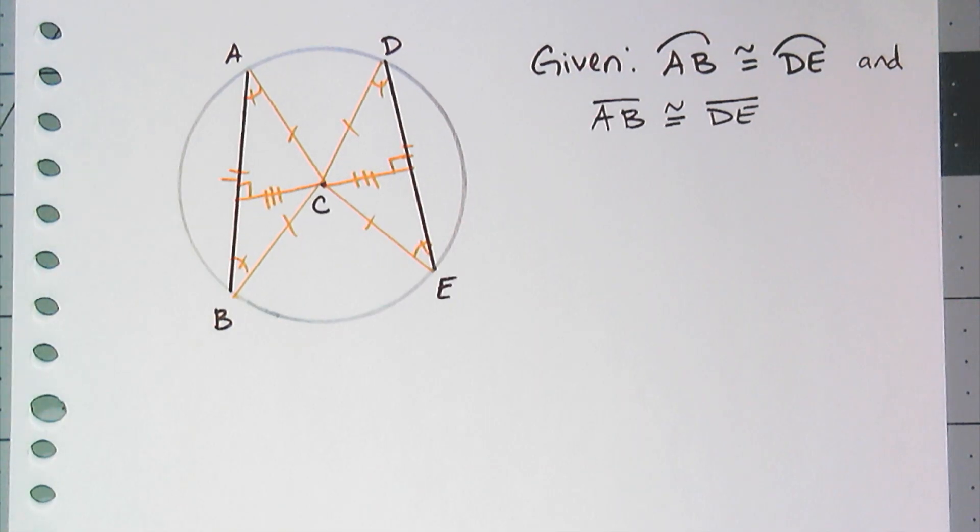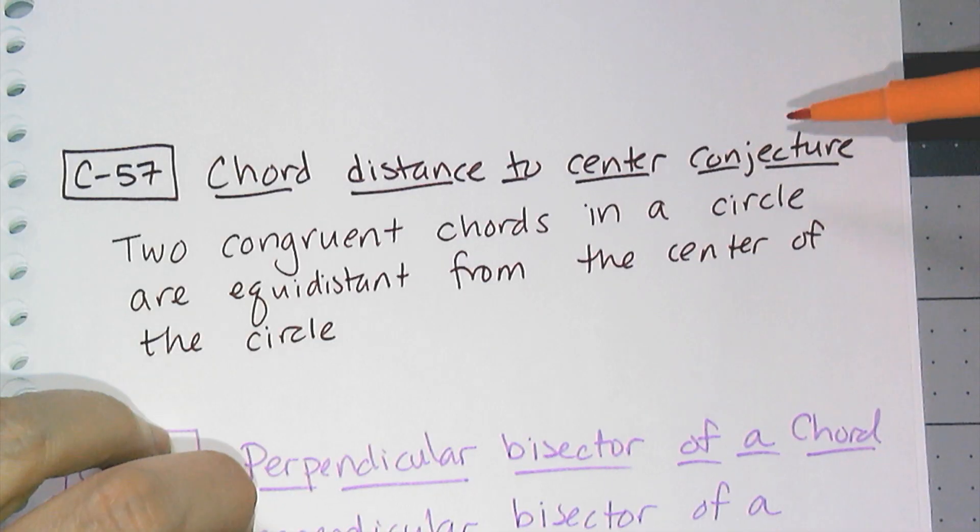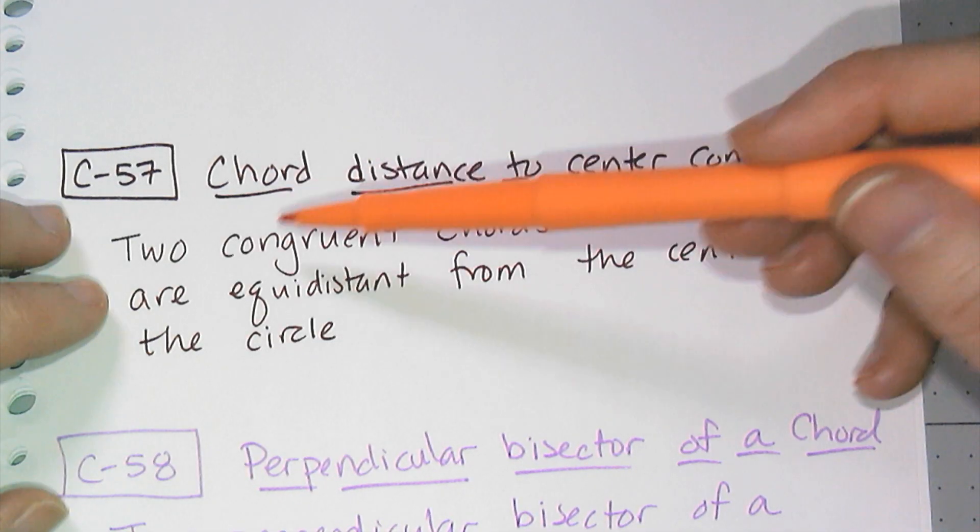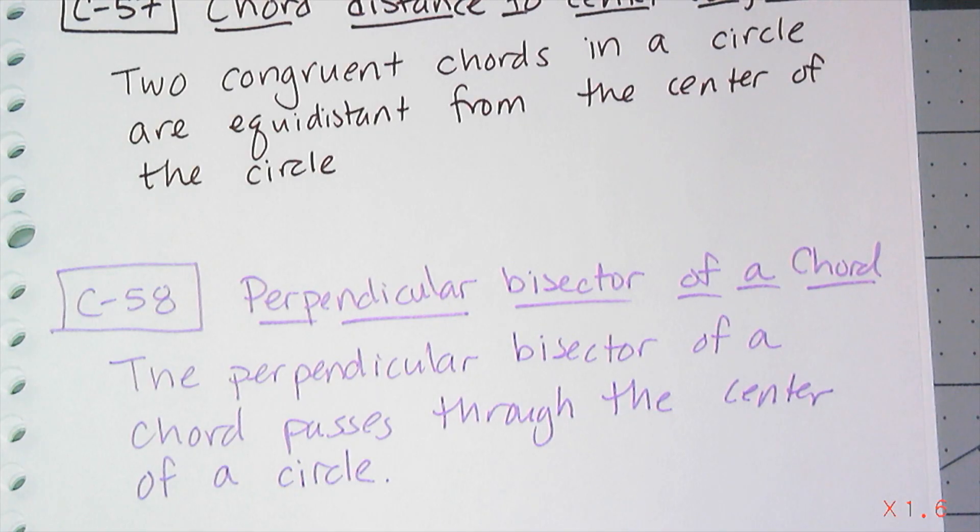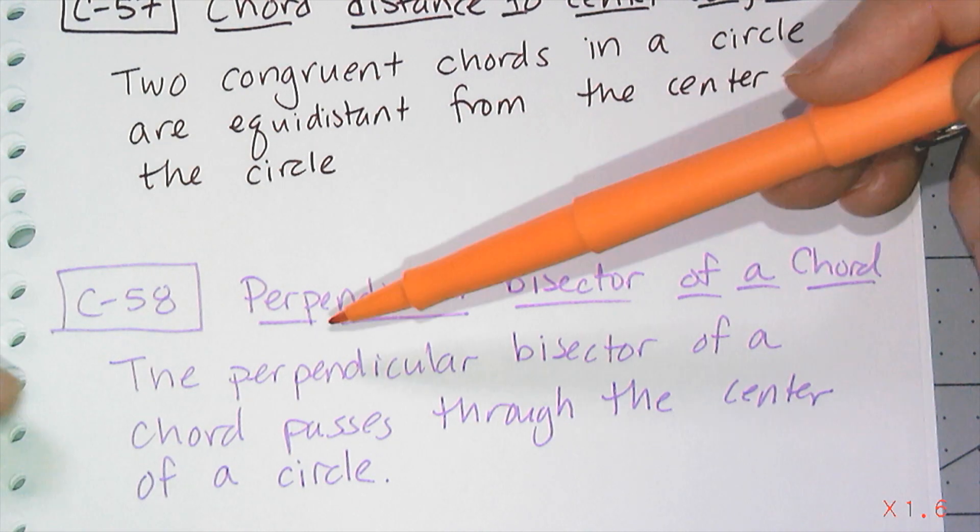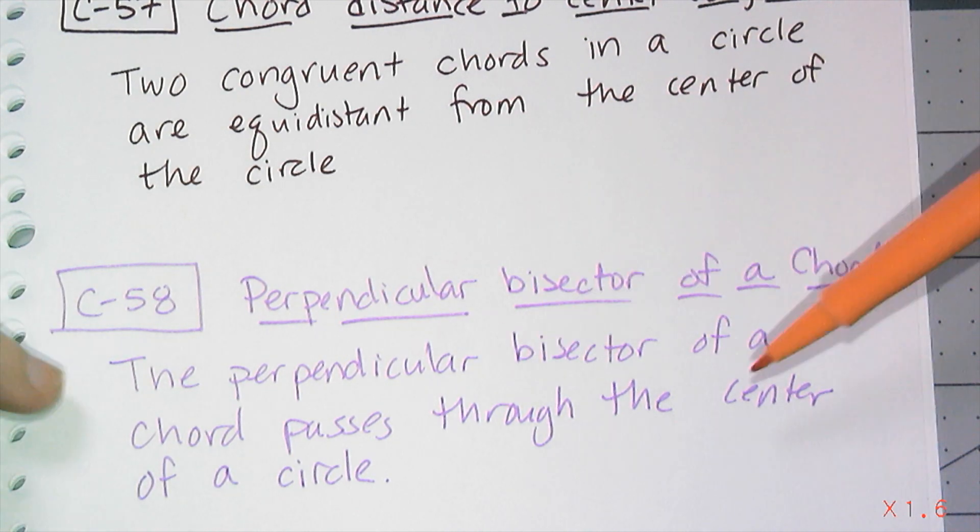Which leads us to conjecture 57, the chord distance to center conjecture. Two congruent chords in a circle are equidistant from the center of a circle. And while we're at it, perpendicular bisector of a chord. The perpendicular bisector of a chord passes through the center of a circle. Seems kind of obvious at this point.